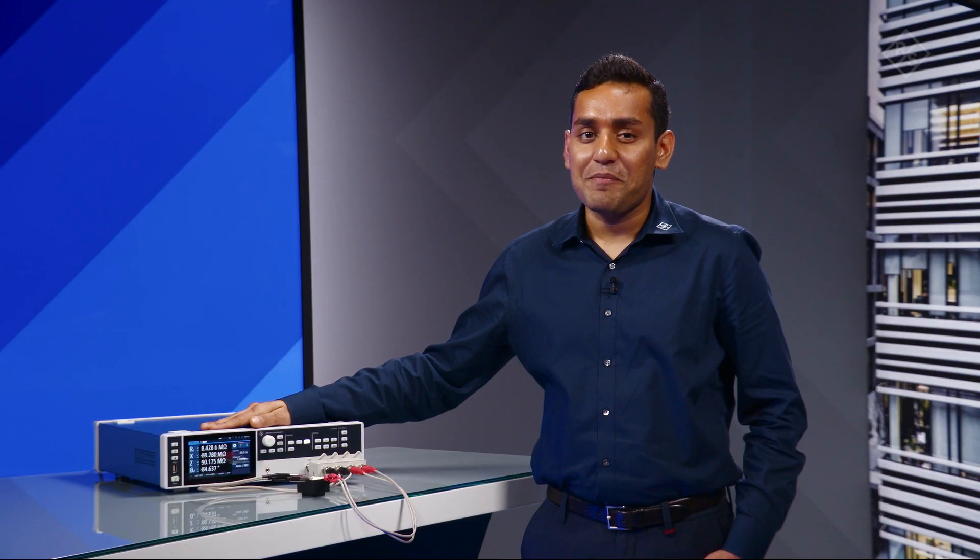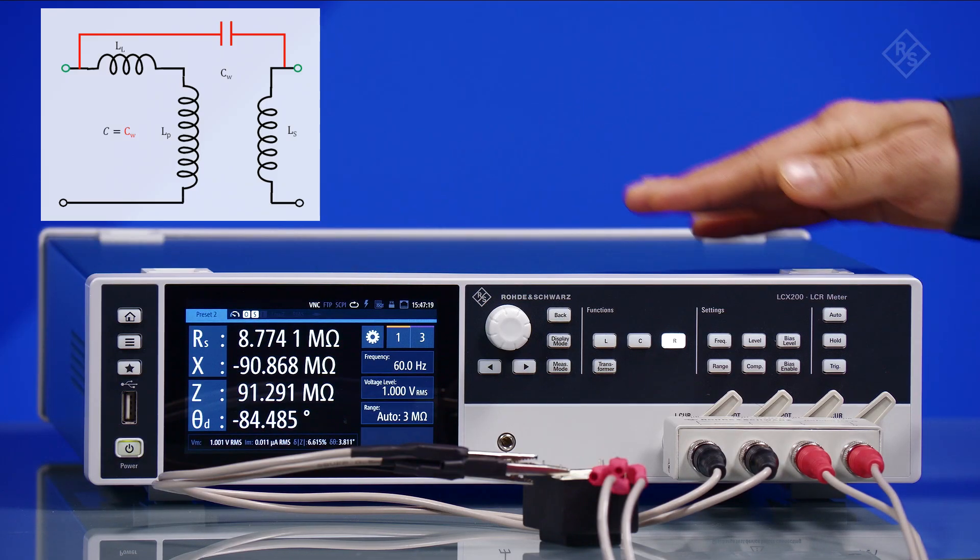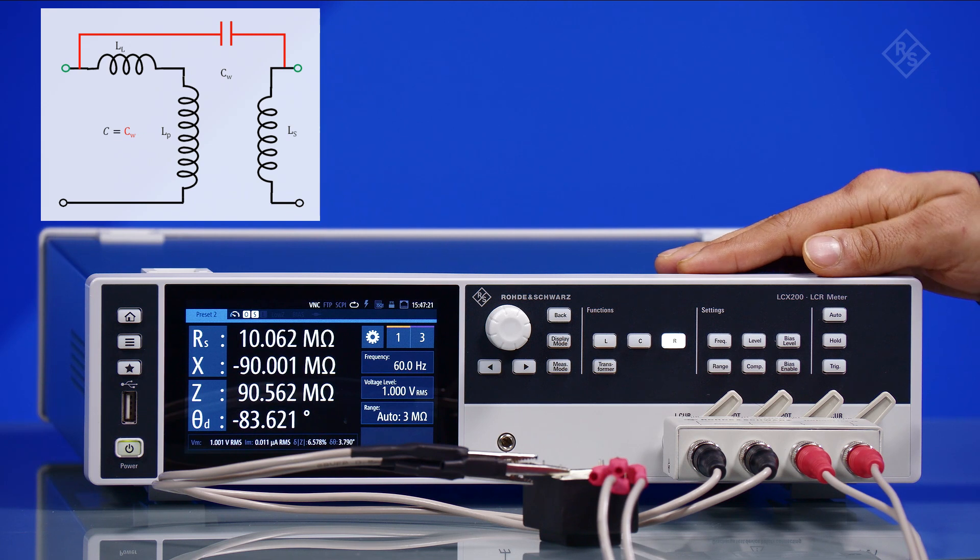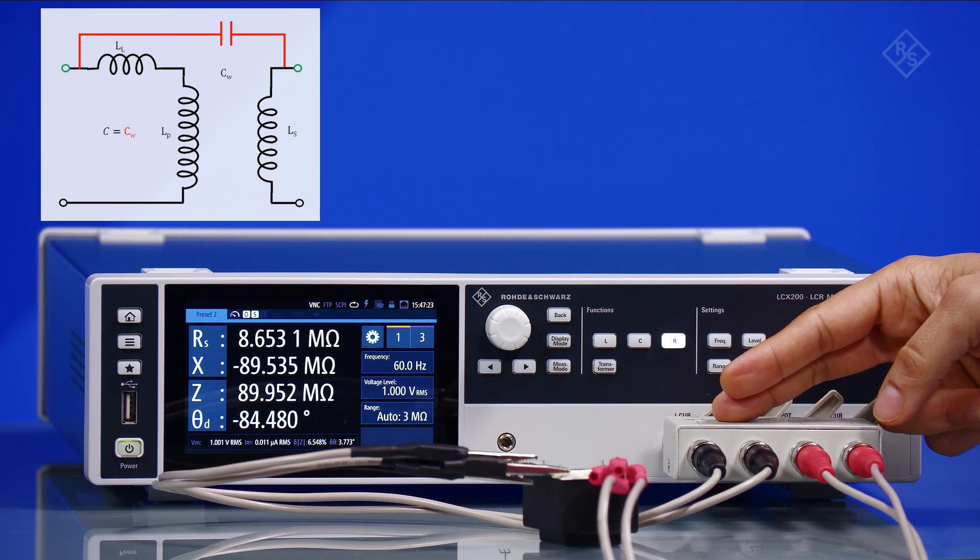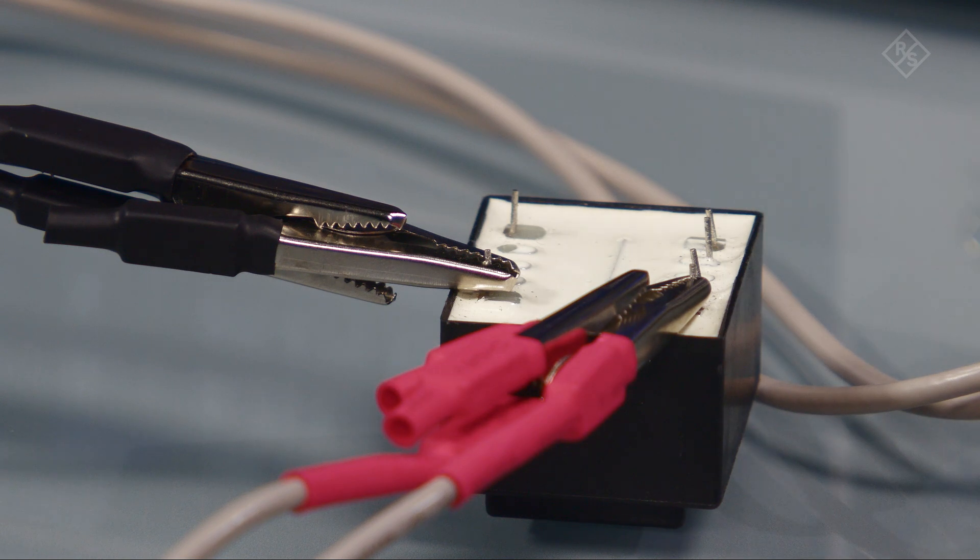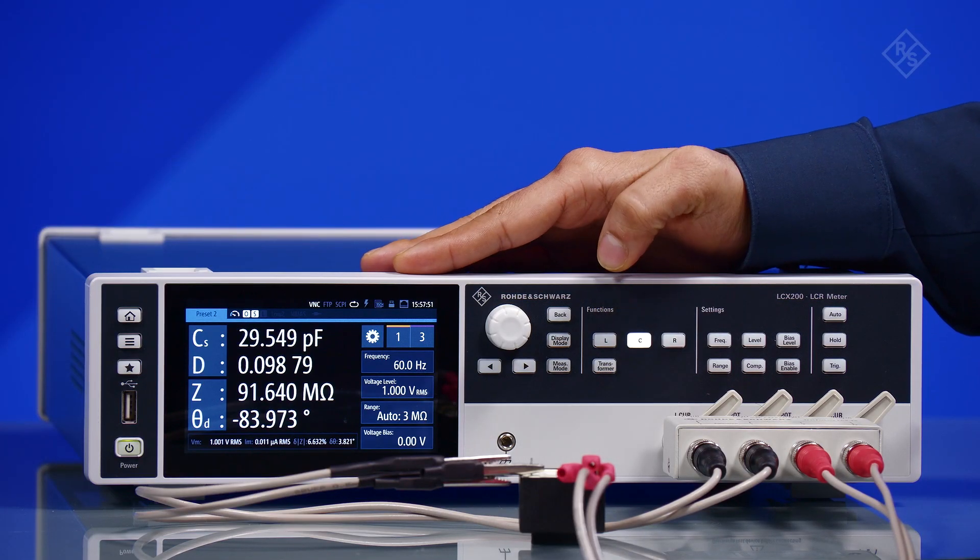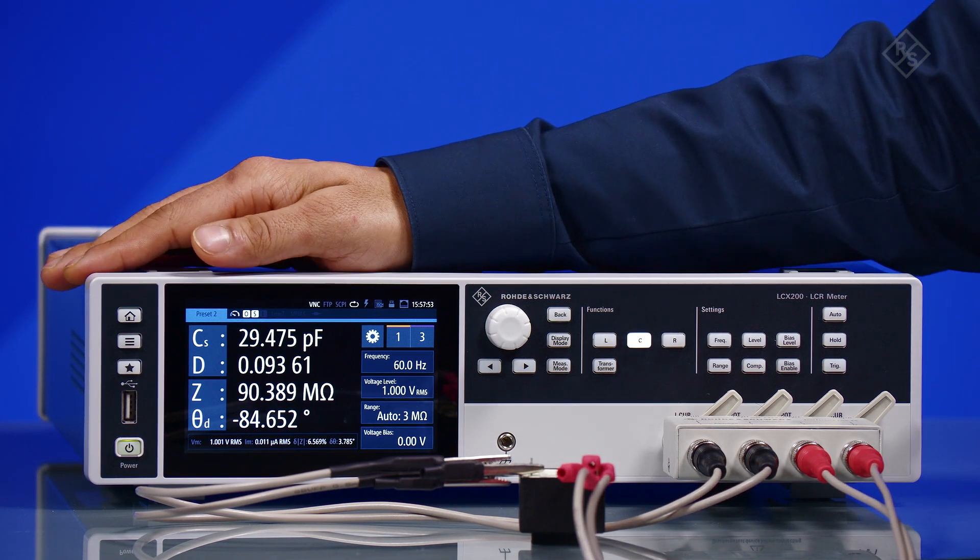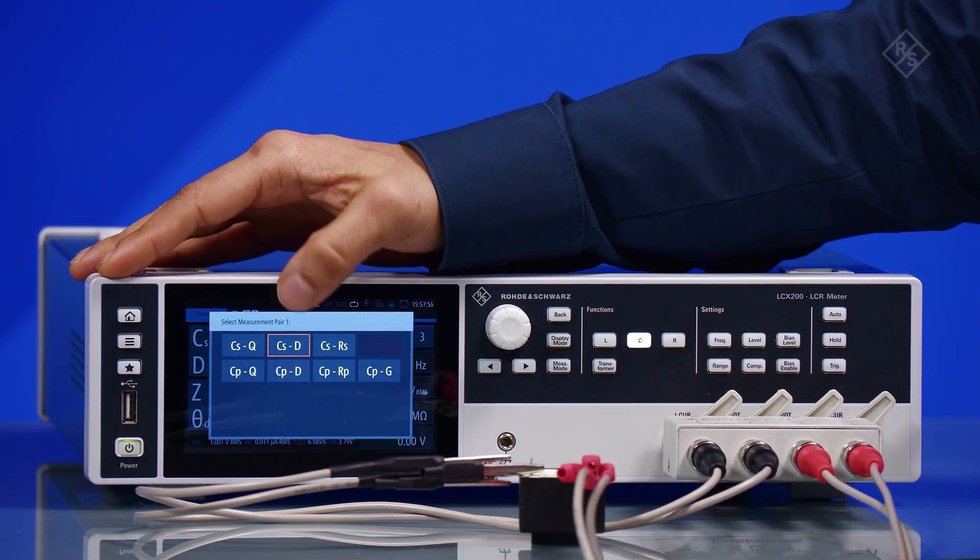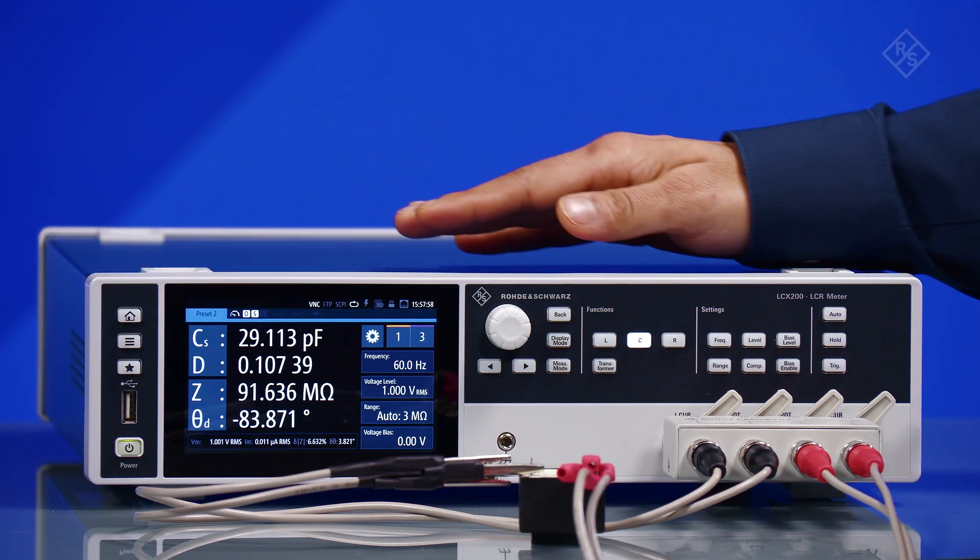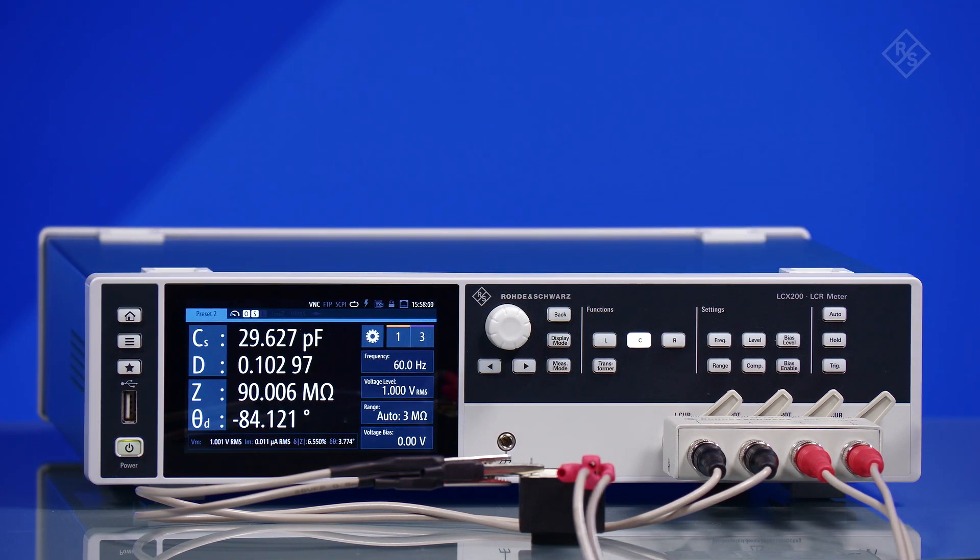Are you now interested in learning how to measure the interwinding capacitance of the transformer? Let us have a look. Connect the common test leads to one terminal of the primary winding and connect the one and N test leads to one terminal of the secondary winding. Leave the other terminals open. Press the C key and choose CST as the measurement parameter. The LCX meter now displays the interwinding capacitance.